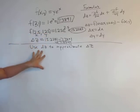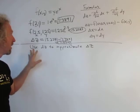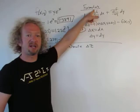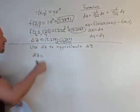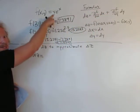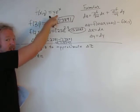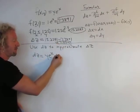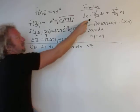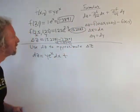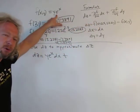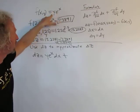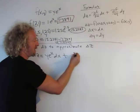Now we have to use dz to approximate Δz. Let's compute dz first using the formula: dz = (∂f/∂x)dx + (∂f/∂y)dy. The partial with respect to x: y is constant, so it hangs out. The derivative of e^x is e^x, so you get ye^x dx. Plus ∂f/∂y: we're fixing x, so e^x is constant. The derivative of y is 1, so we get e^x dy.